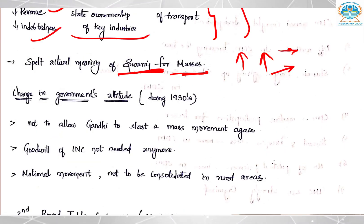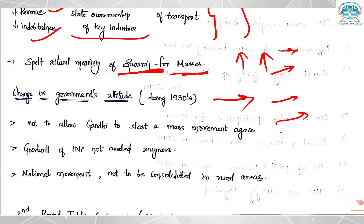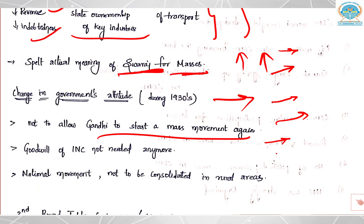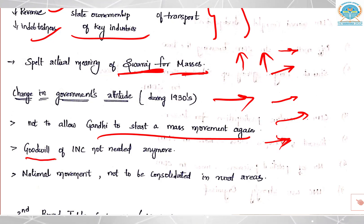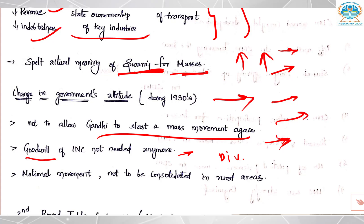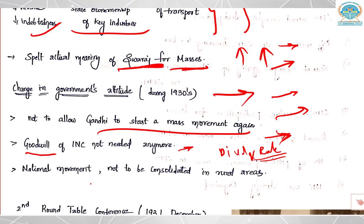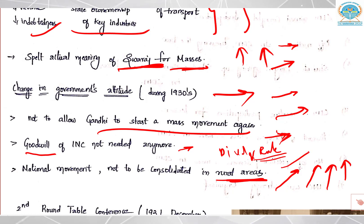Now, what was the change in the government's attitude during the 1930s? Mass mobilization was happening and people were talking about Swaraj. The government was thinking they will not allow Gandhi to start a mass movement again, because they knew that if a movement happened again on a large scale they would absolutely lose control and power of the country. The goodwill of the Indian National Congress was no longer needed, as the British had other loyalists. They wanted to make sure the national movement would not consolidate in the rural areas, from where many masses were joining the national platform.